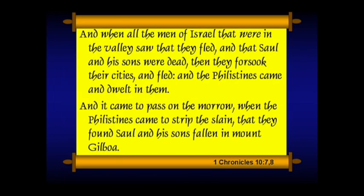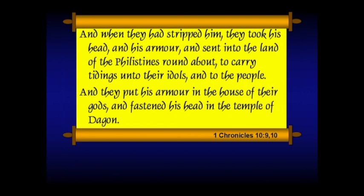When all the men of Israel in the valley saw that they fled and that Saul and his sons were dead, then they forsook their cities and fled, and the Philistines came and dwelt in them. It came to pass on the morrow when the Philistines came to strip the slain that they found Saul. And when they had stripped him, they took his head and his armor and sent into the land of the Philistines roundabout to carry tidings unto their idols and the people, and they put his armor in the house of their gods and fastened his head in the temple of Dagon. The first 12 verses of 1 Chronicles 10 are almost identical to 1 Samuel 31. Chronicles adds the detail that his head was fastened in the temple of Dagon, but also that they hung his body on the wall at Beth-shan.